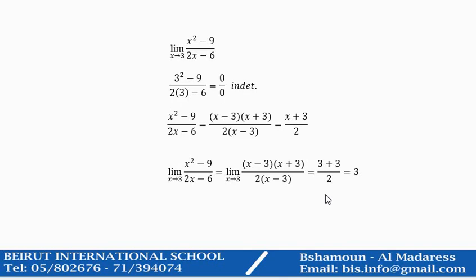Another example, if we want to find the limit as x approaches 3 of x squared minus 9 over 2x minus 6. The first thing we do is substitute. By substitution, we ended up with one of the indeterminate forms, 0 over 0.